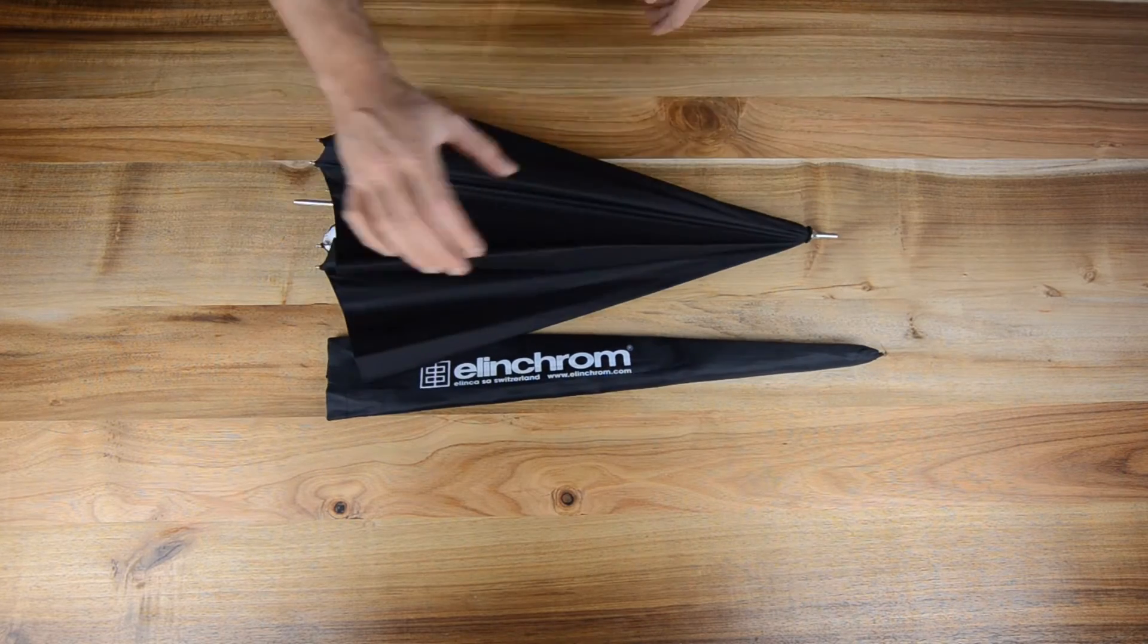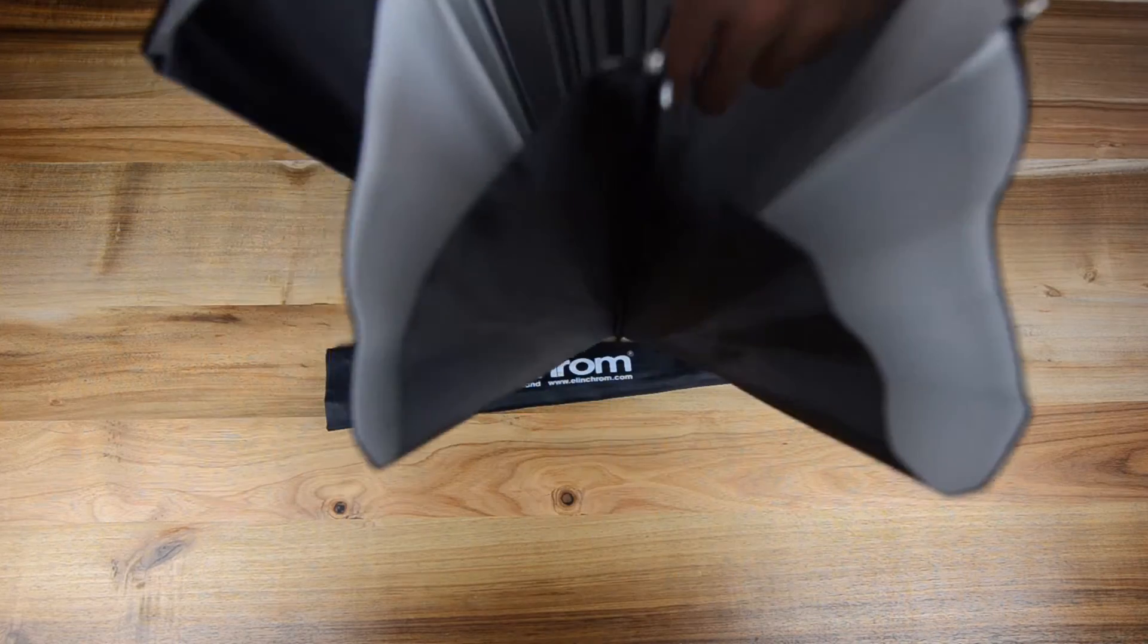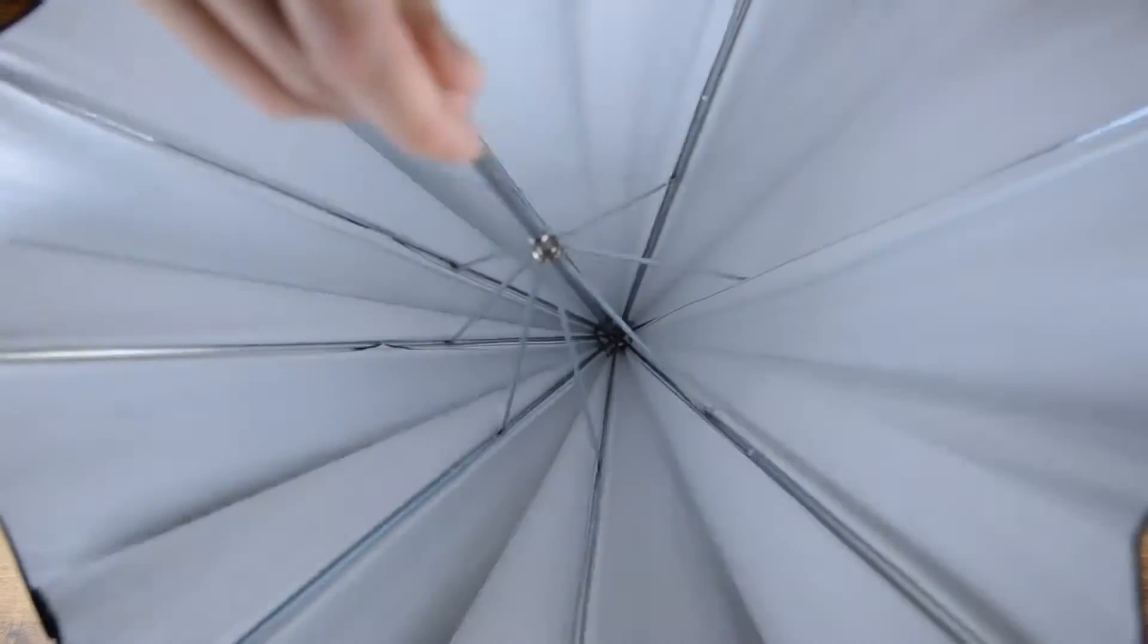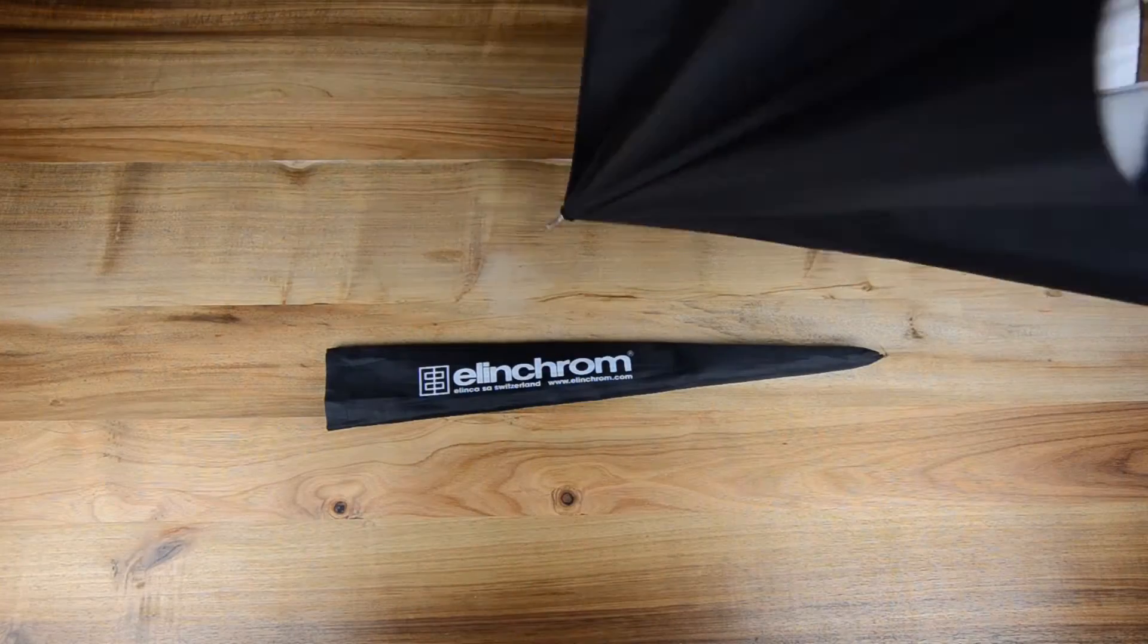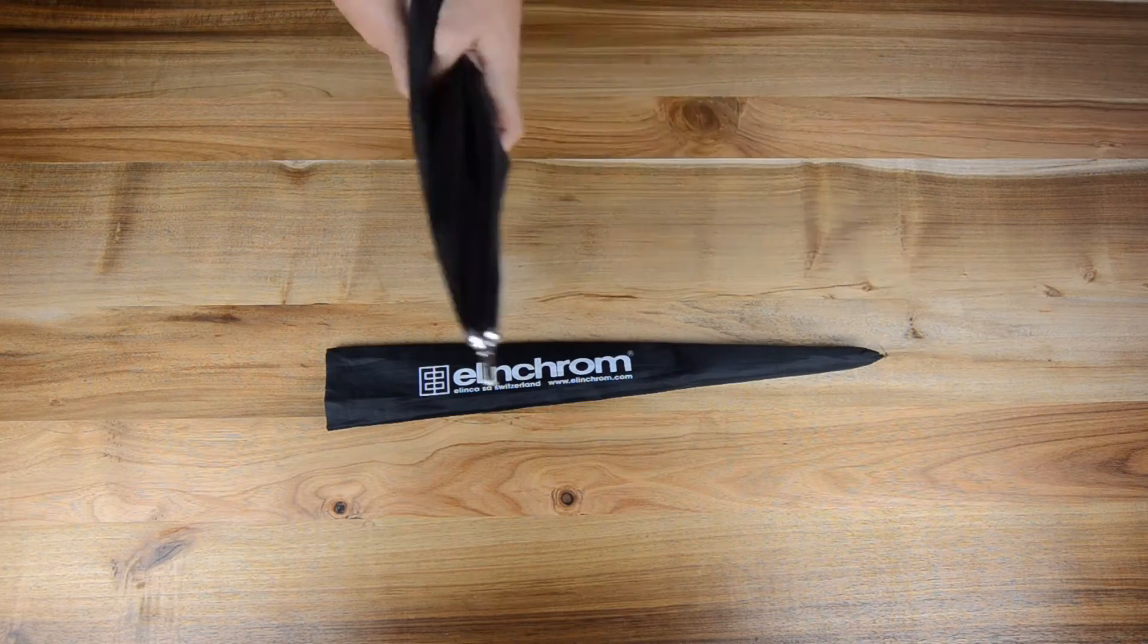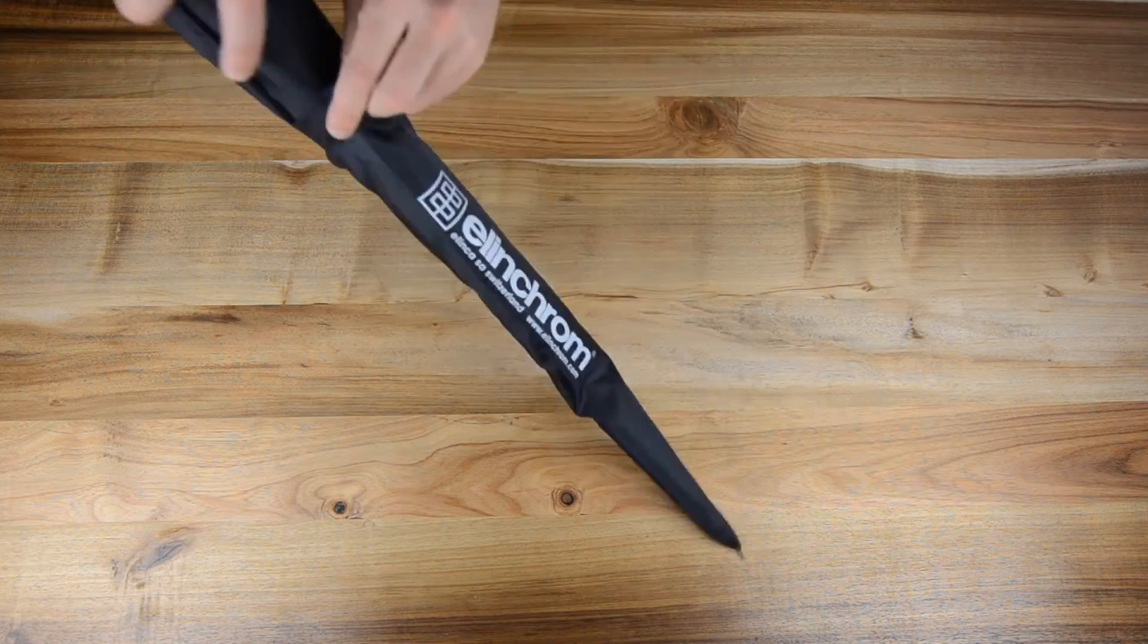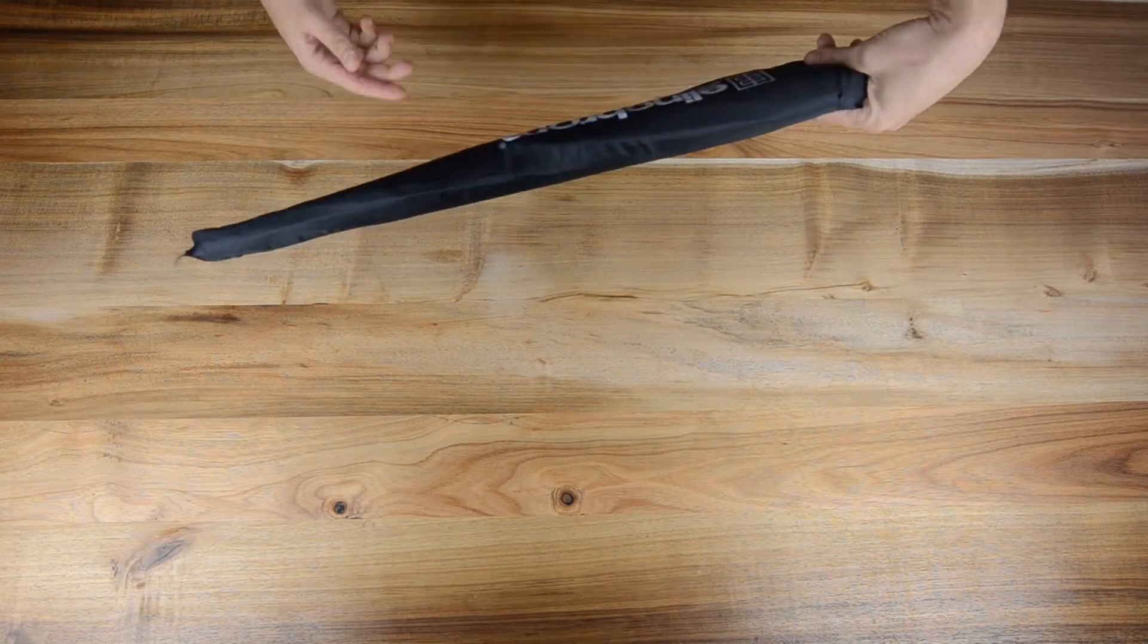Our first umbrella here is an Elinchrom umbrella, 102 centimeter and white inline as you guys can see over here. So this is not a shoot-through umbrella, also black on the outside. We have two of these we use to shoot portraits with. Comes with a little bag over here from Elinchrom. Really nice and neat. That's umbrella number one.